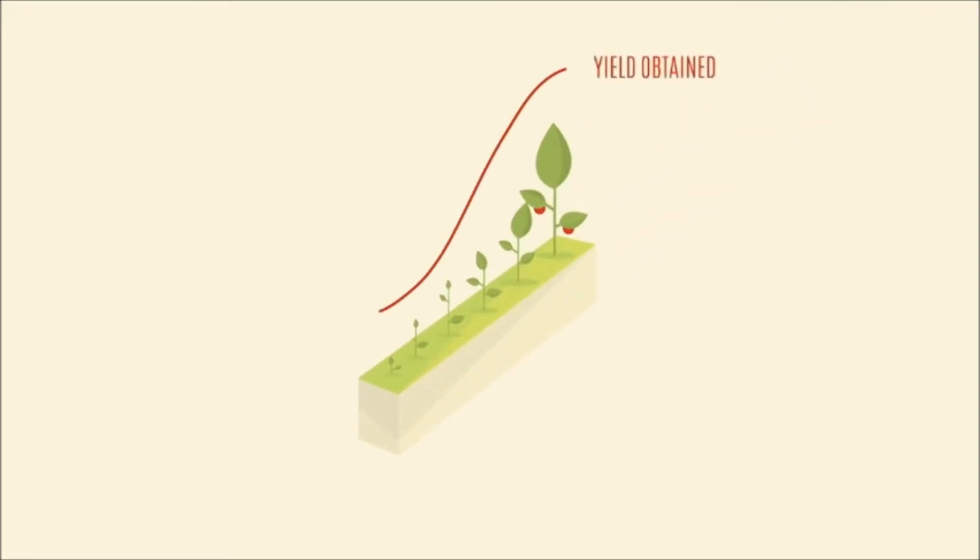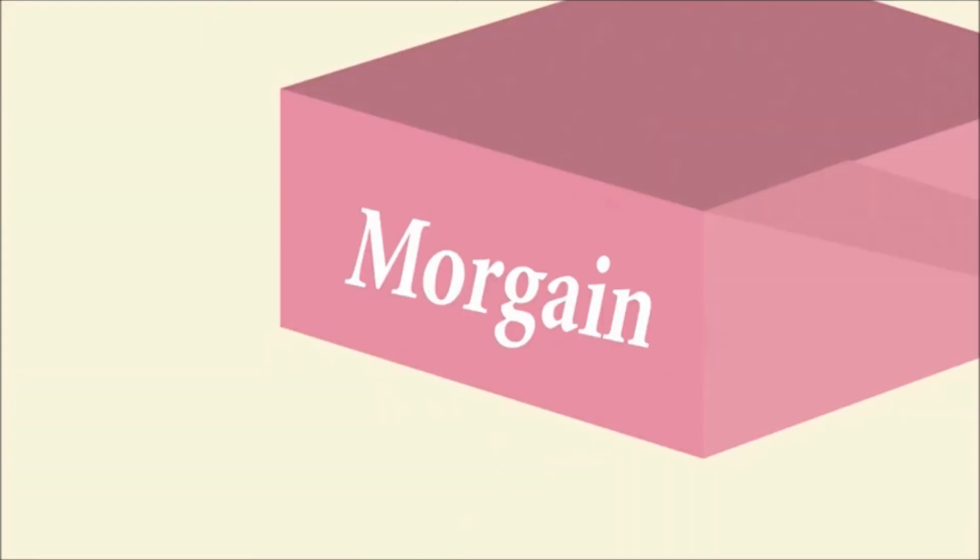What are the consequences? The plants can't reach their maximum yield potential. This is why we created Morgan.